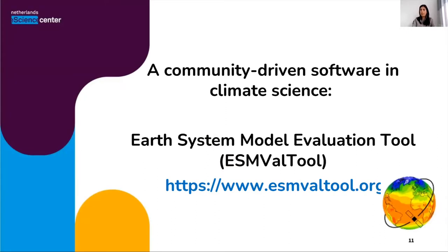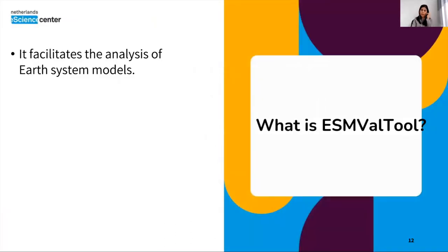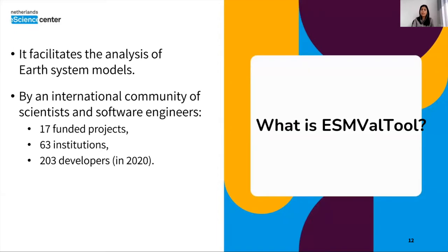Here is an example: ESMValTool 2, or Earth System Model Evaluation Tool 2, which is a community-driven software. ESMValTool 2 is a software that facilitates the analysis of Earth System Models. It is built and maintained by an international community of scientists and software engineers. It involves around 17 projects, 16 institutions, and 200 developers. The community includes scientific and technical teams that review the code and contributions.